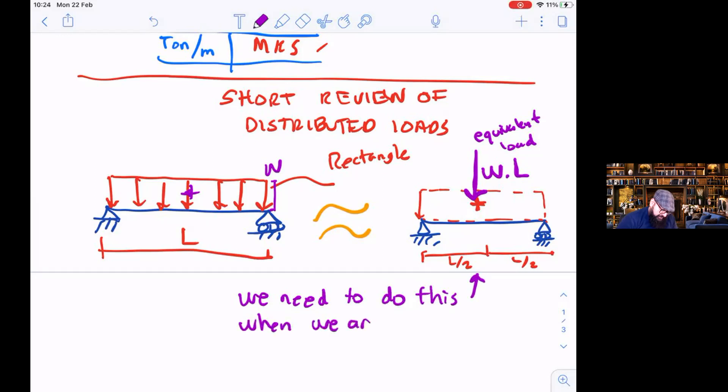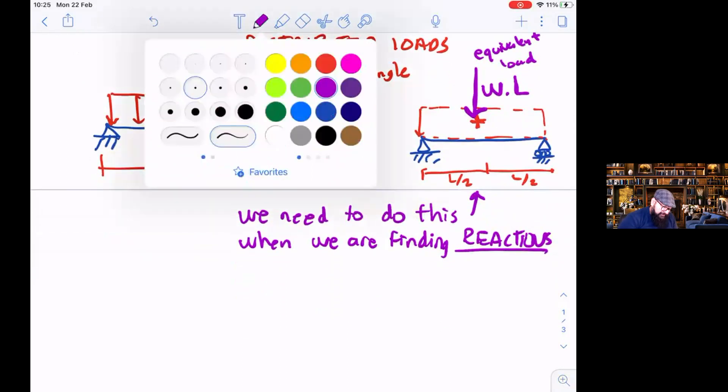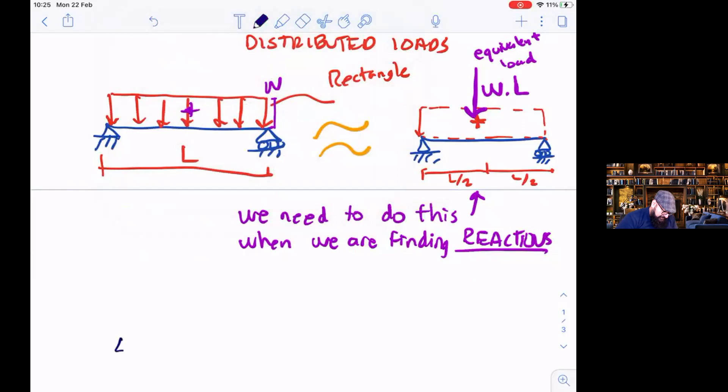When we are finding reactions. And remember the first step was finding reactions for the graphic method. So we are finding reactions and we have a distributed load. First, we need to put it as a concentrated load, equivalent one, but just for reactions, only for reactions.